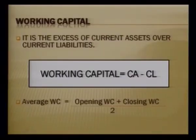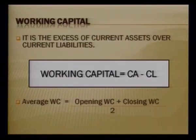It depends on what information is available. If only sales is defined, use sales; if cost of sales can be computed, that is better. The denominator is average working capital — opening working capital plus closing working capital divided by two. In most questions if opening and closing figures are not separately given, simply compute working capital as current assets minus current liabilities.